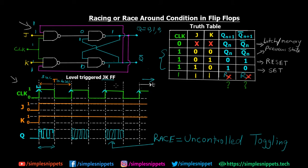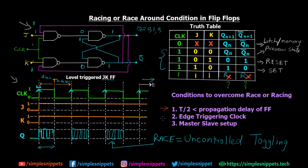So that's detailed information about what racing and race condition are. Basically, racing is when the output keeps fluctuating very fast and we are not able to control it. Now, how do you get around this race around condition? There are three different ways racing can be completely avoided. Number one: T/2 is less than the propagation delay of the flip-flop.